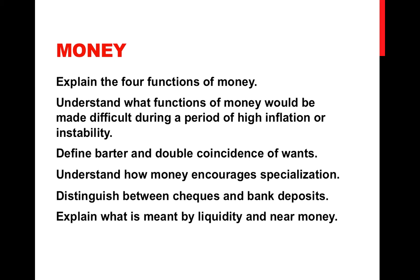Looking at money in this unit, you'll need to know about the four functions of money: medium of exchange, store of value, unit of account, and means of deferred payment. Understand which functions would be more difficult during a period of high inflation or instability — for example, in countries with rapid inflation, the medium of exchange function may erode. You should also be able to define barter and the concept of the double coincidence of wants, and how money allows us to get past that and encourages specialization in a way that bartering doesn't. Distinguish between checks and bank deposits, and understand what liquidity is and the concept of near money.